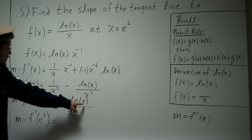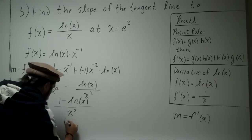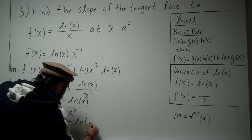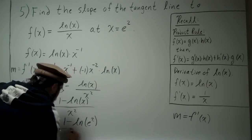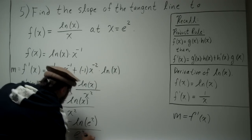What do we get? We plug e squared here. Divide by e to the fourth.